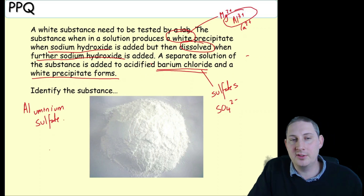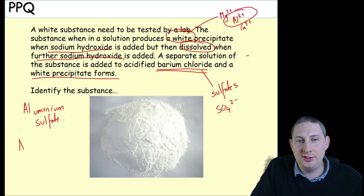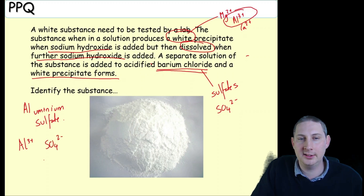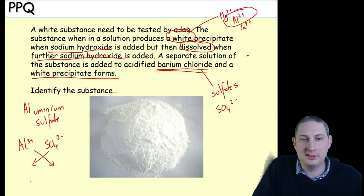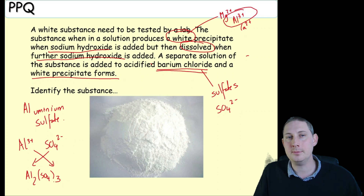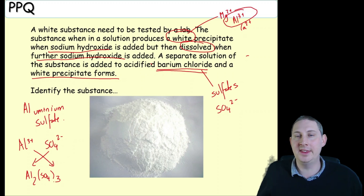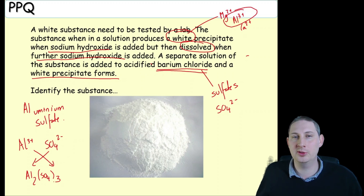The formula of aluminium sulfate: if we have Al³⁺ and SO₄²⁻, we have a 3+ charge and a 2− charge, so the formula must be Al₂(SO₄)₃. That is how you approach this type of question.